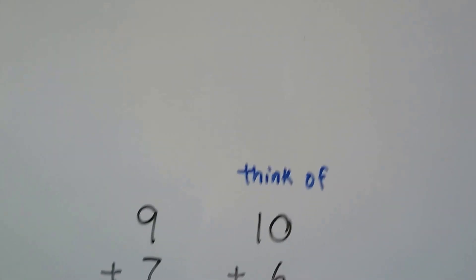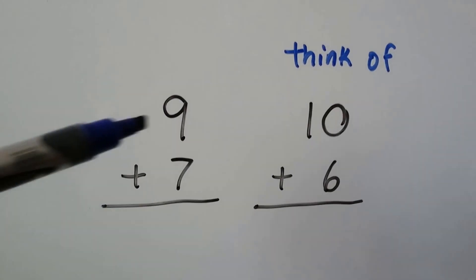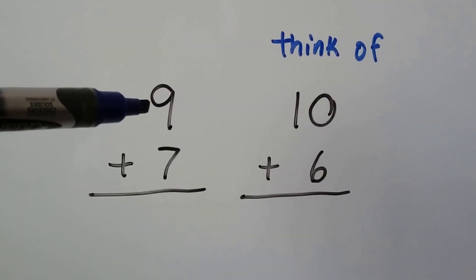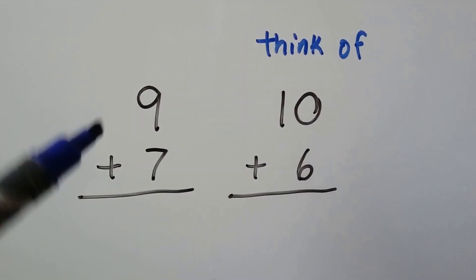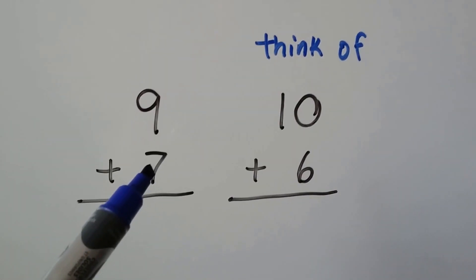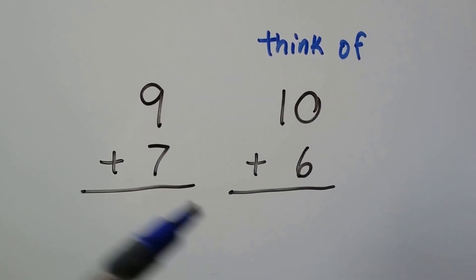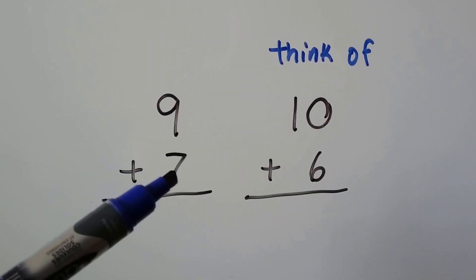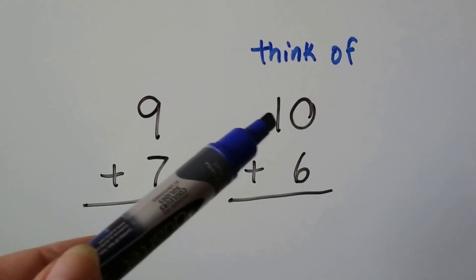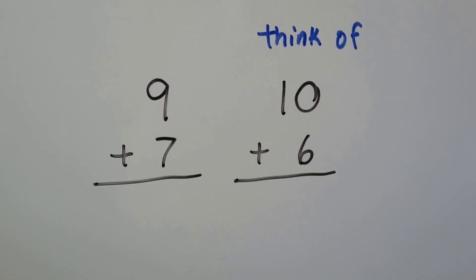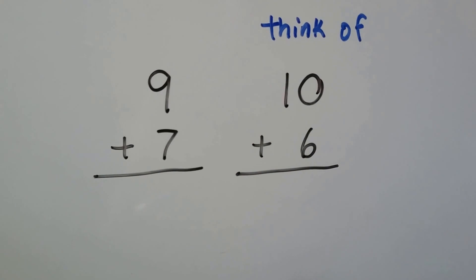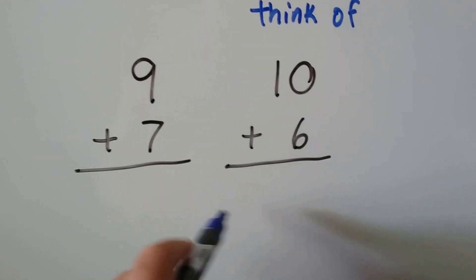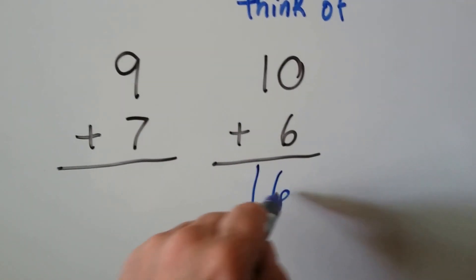Let's try it again — we have 9 plus 7. We make the 9 go up by 1 to a 10, and we make the 7 go down by 1 to a 6, because it gave one of its counters to that 9, so it became a 6 and the 9 became a 10. So 9 plus 7 is the same thing as 10 plus 6, and 10 plus 6 is 16.